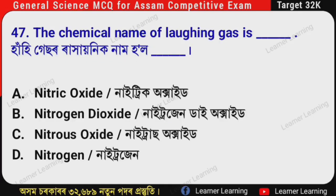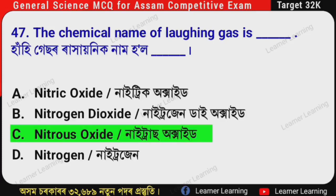Next question: The chemical name of laughing gas is — (Assamese: Haan hi gas or rakhonik naam hal?) The correct option is Option C — Nitrous oxide. The chemical name of laughing gas is Nitrous oxide. It is also a very important question.